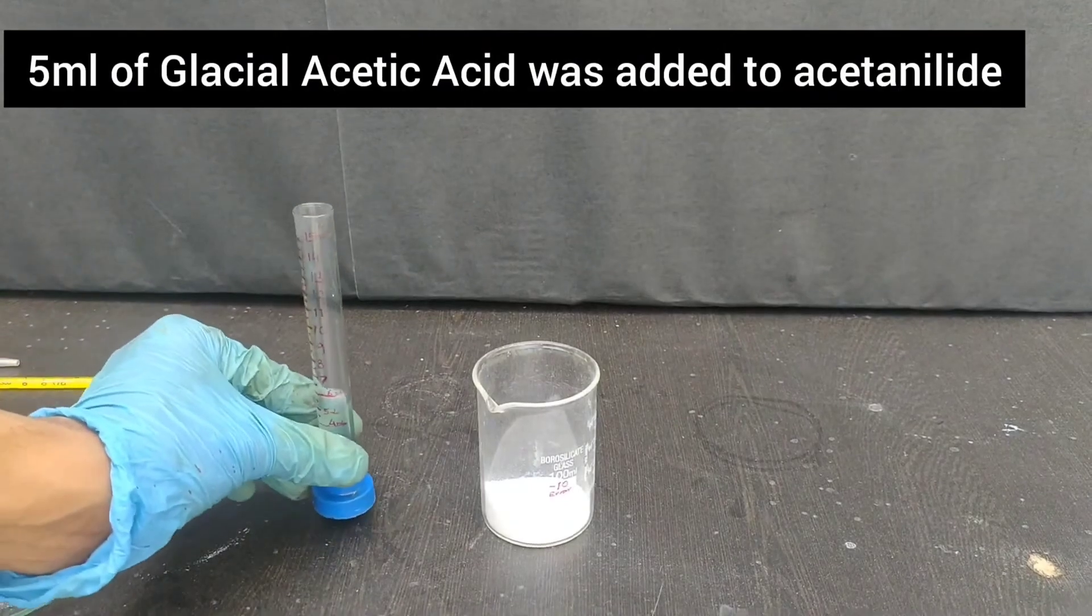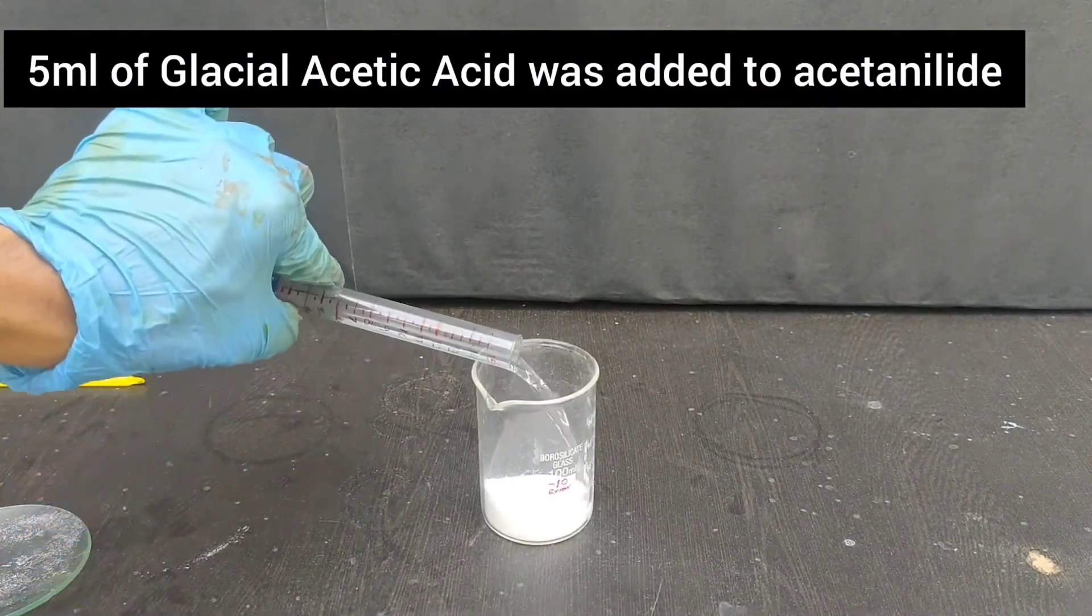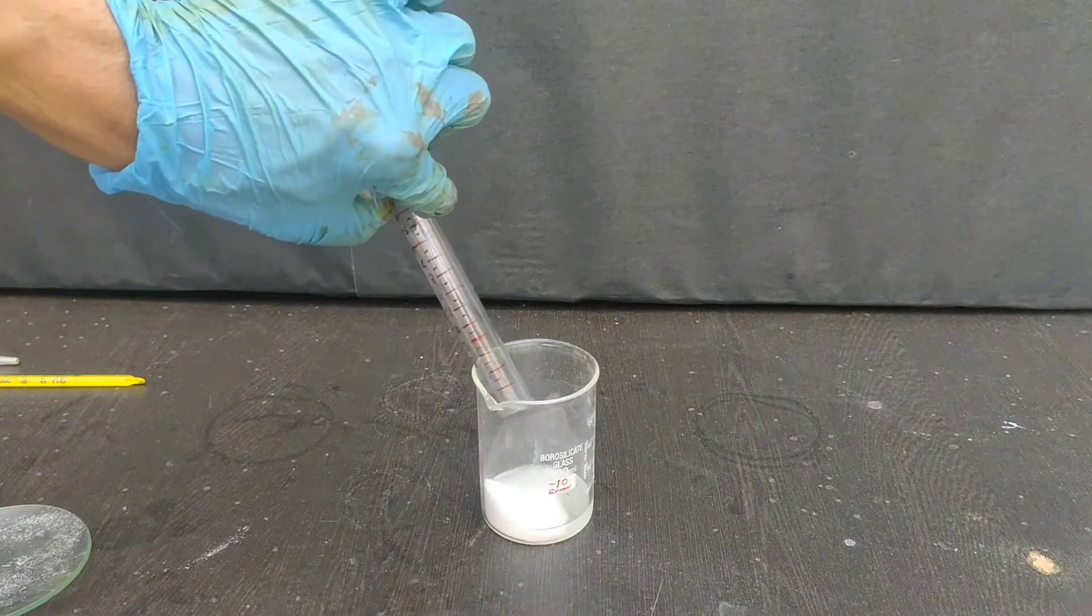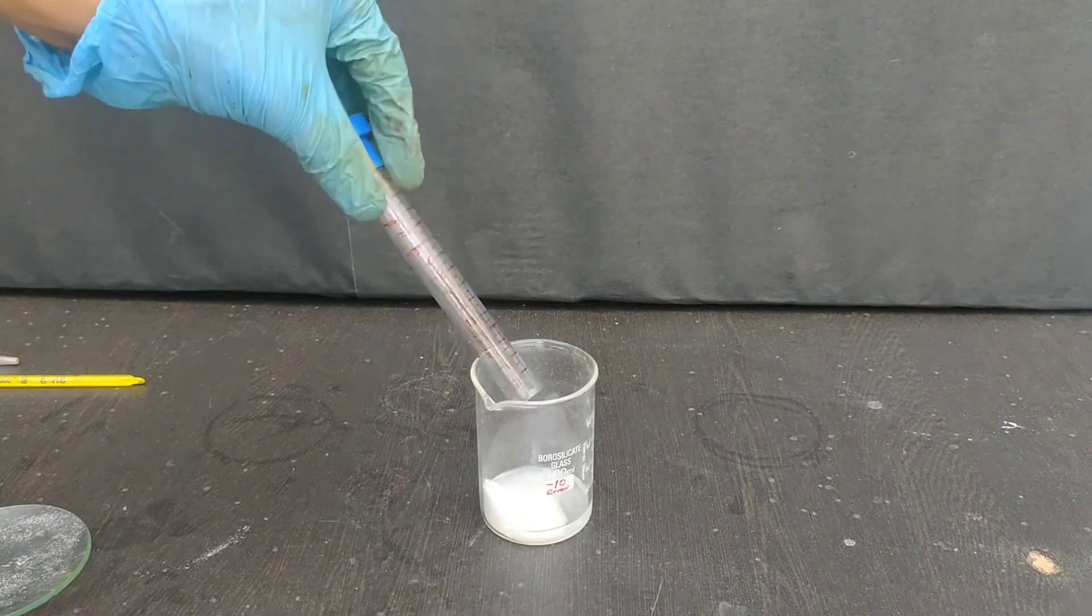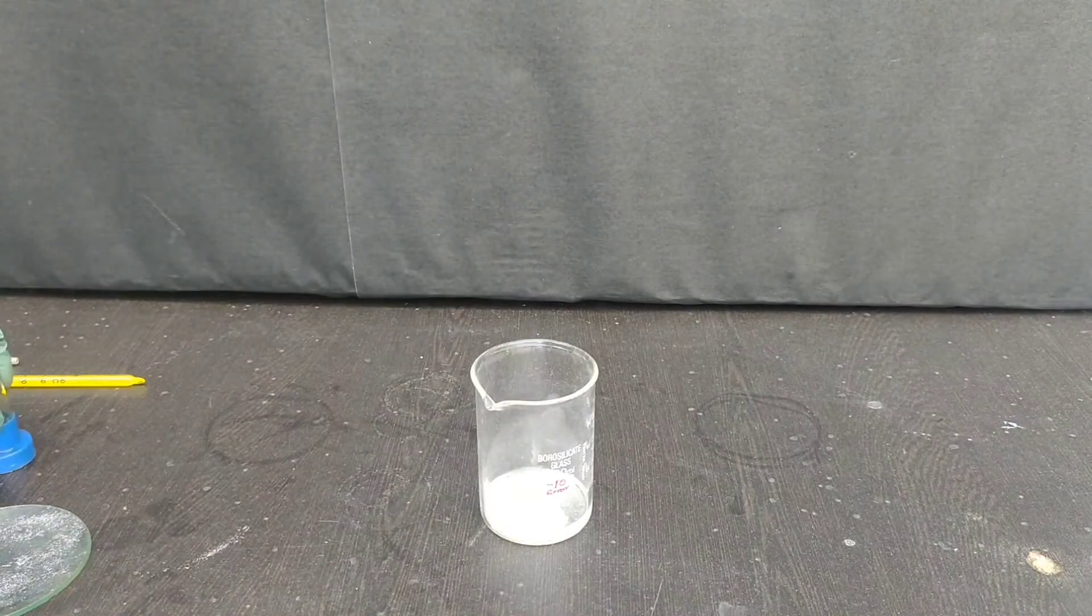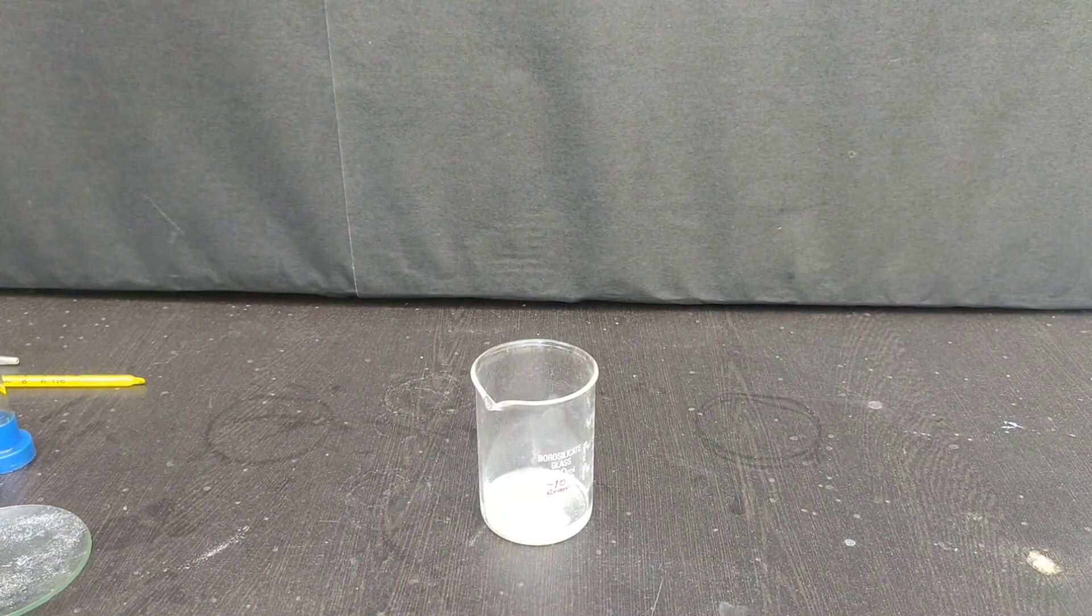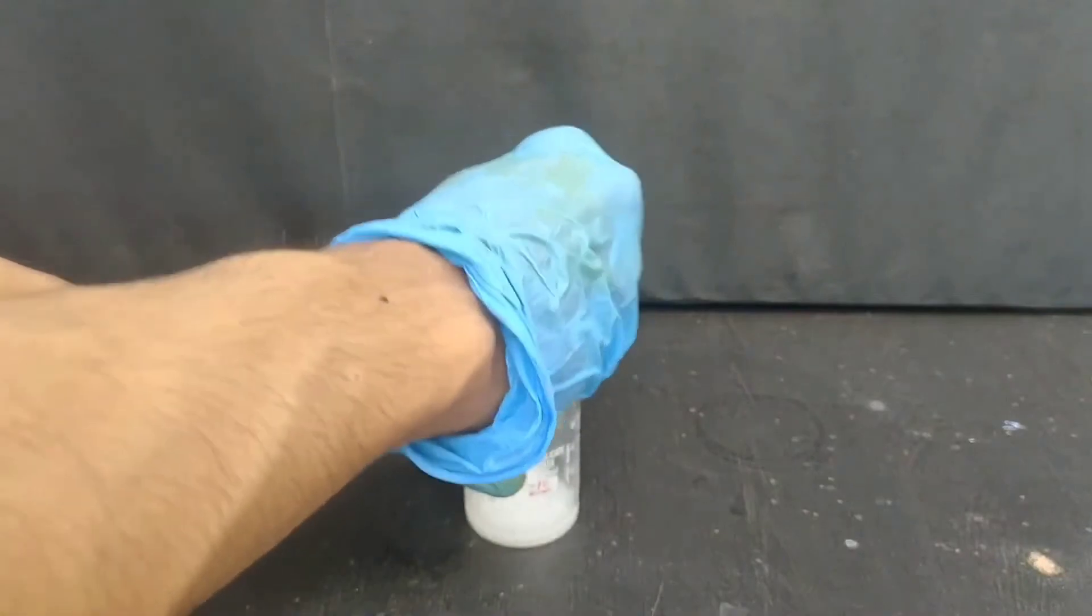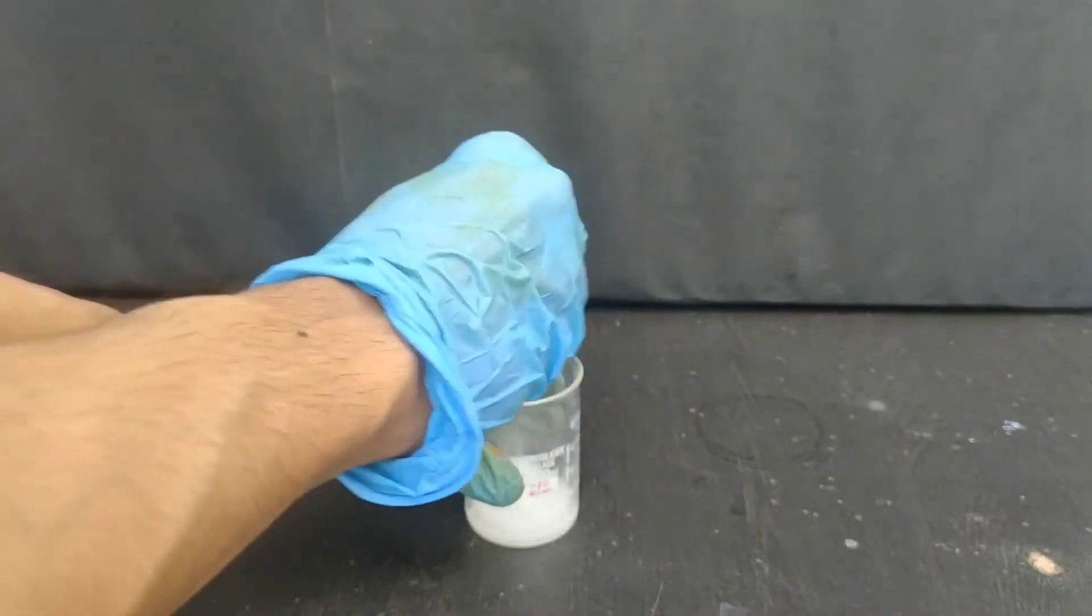To the acetanilide, I will be adding 5 ml of glacial acetic acid. Glacial acetic acid is used to prevent hydrolysis of acetanilide by shifting the equilibrium to the left side. Dissolve it well in glacial acetic acid.